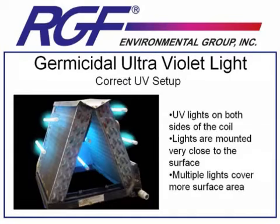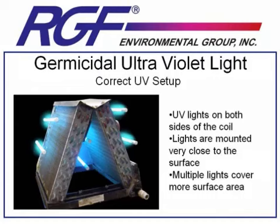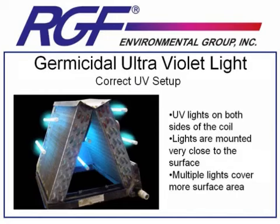This is an effective UV light installation for keeping a coil clean. UV lights are mounted on both sides of the coil, very close to the surface to minimize power loss due to distance. Multiple lights are used to cover the surface area, ensuring that every area is getting as much UV light as possible. Even with an advanced UV light setup like the one shown here, you're going to be unable to achieve any kind of meaningful purification in air moving through an HVAC system. To purify moving air, we have to look towards higher-end technologies.